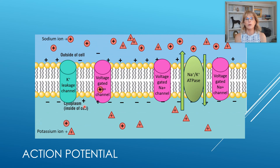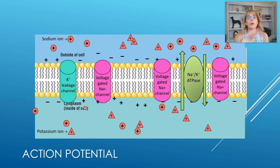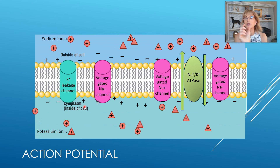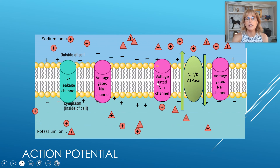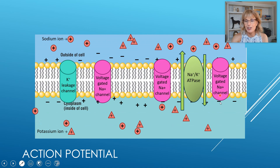If something changes the electricity across this part of the membrane, that opens up the voltage-gated channel. Once open, a positively charged sodium ion comes in, which changes the electricity across the next tiny segment of membrane, opening the next voltage-gated channel, which lets sodium in, which changes the next membrane segment, opening that channel — like dominoes falling.